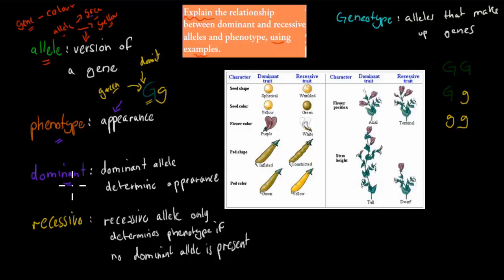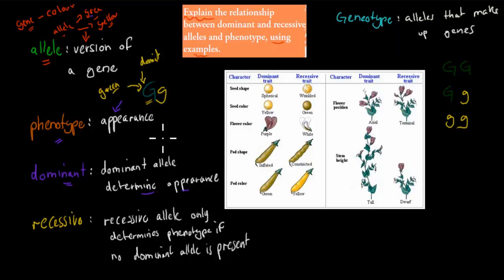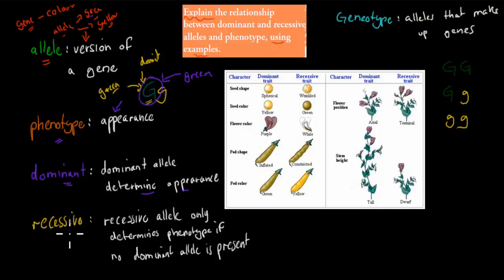Dominance is the determining allele — the dominating allele determines the appearance. So whenever there is a dominant allele in any combination, whatever that dominant allele is will actually be the appearance. In this case there is big G and small g, but because big G is dominant, the actual appearance — the phenotype — will be green.